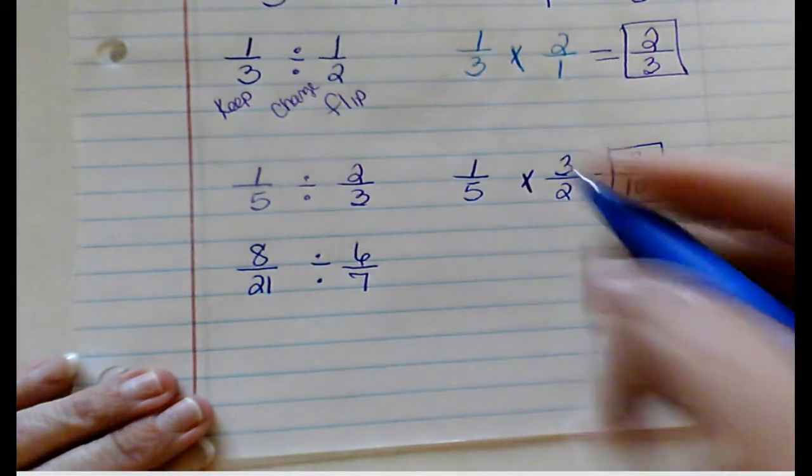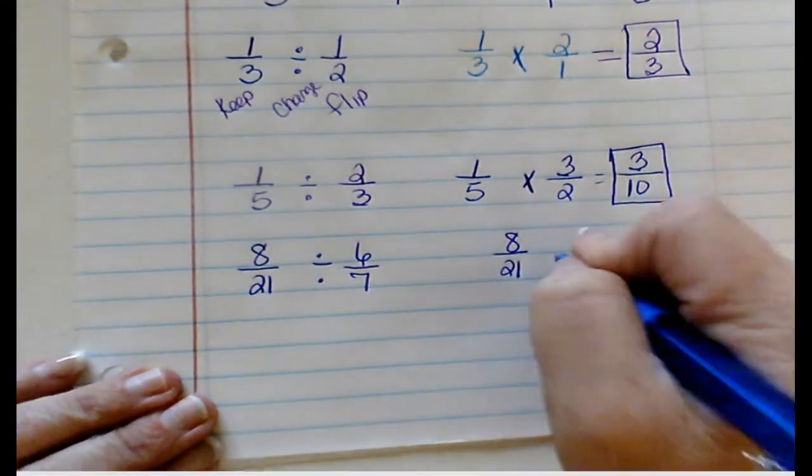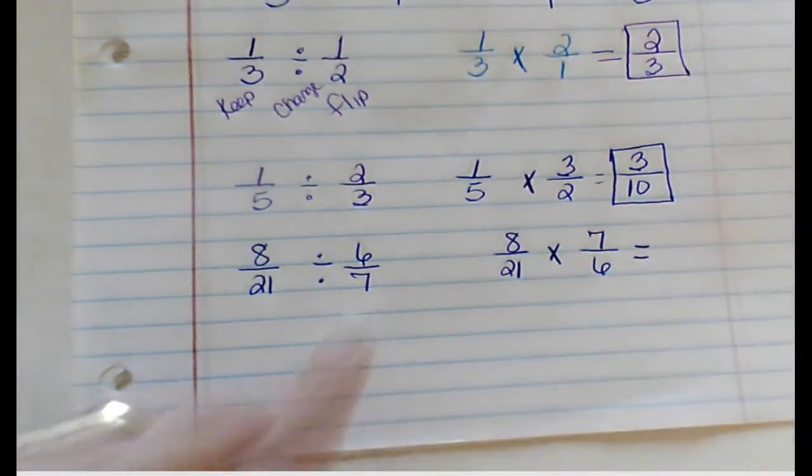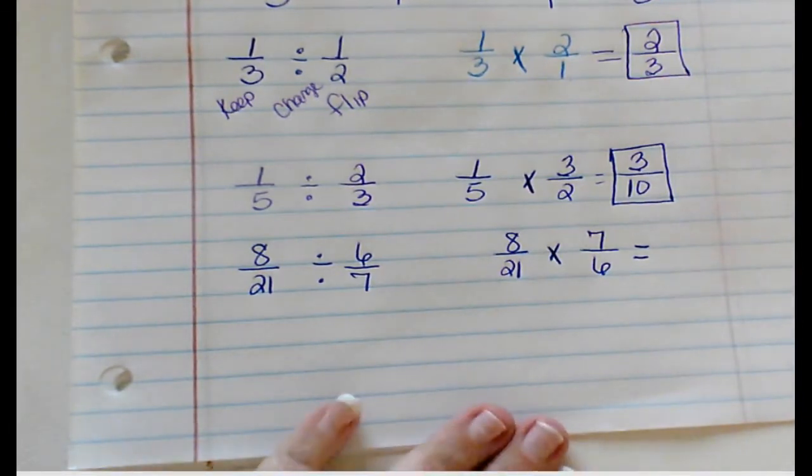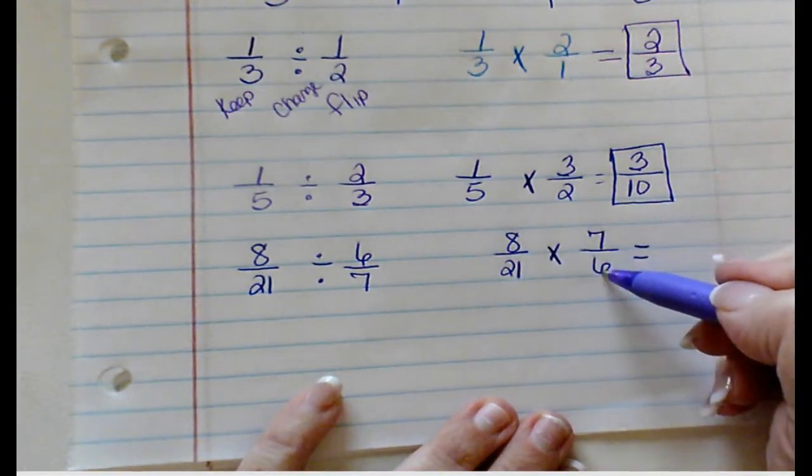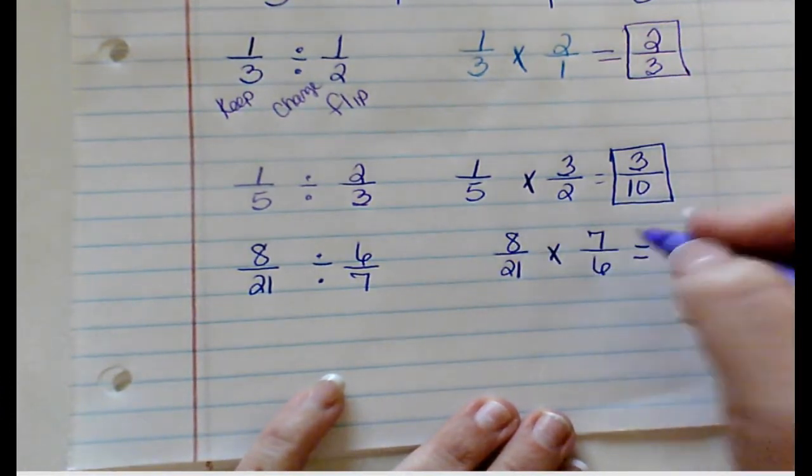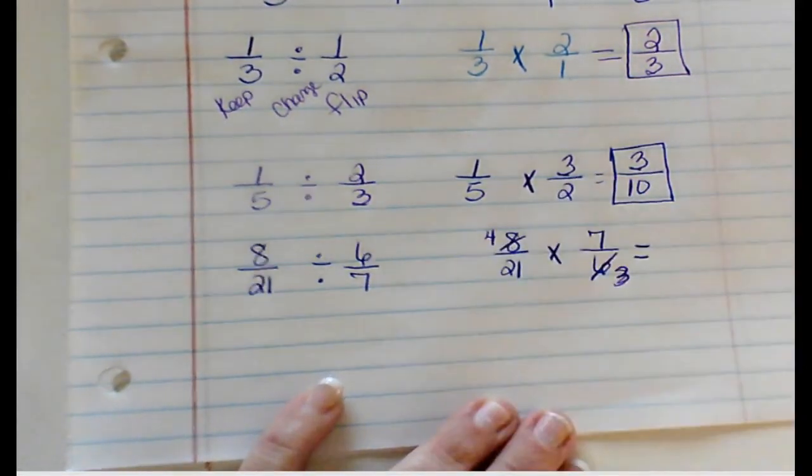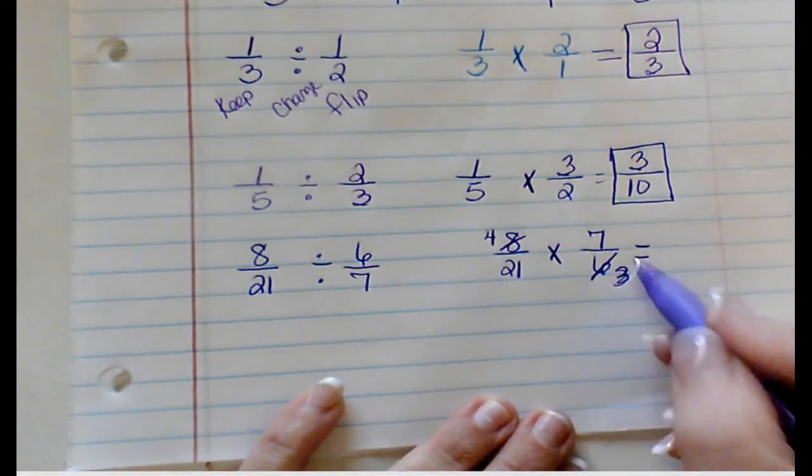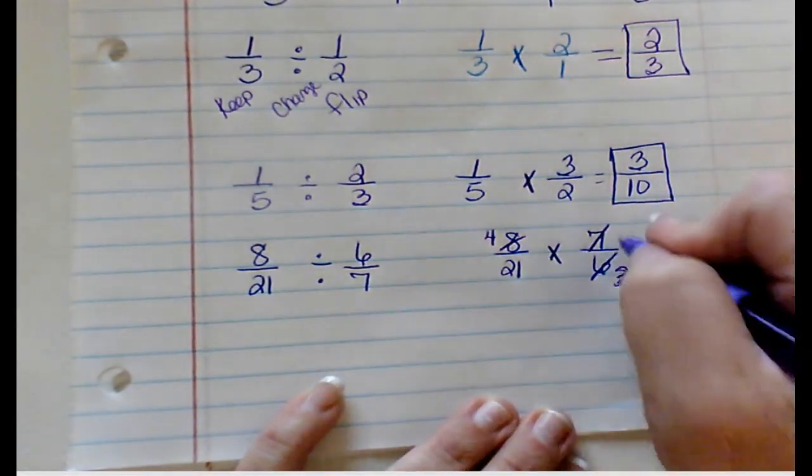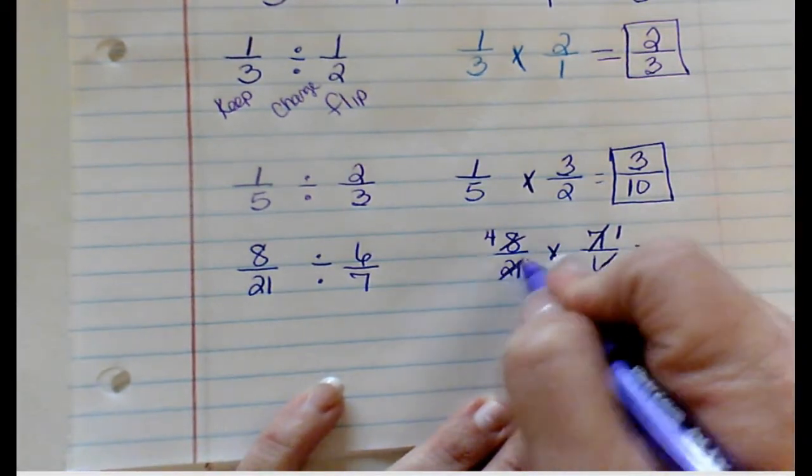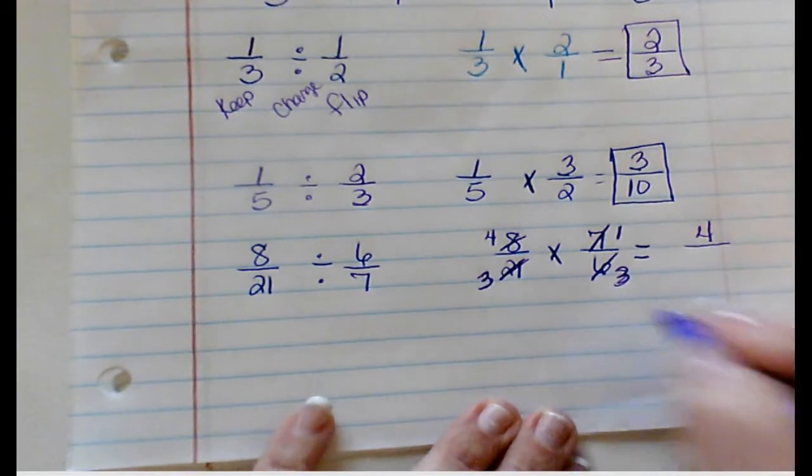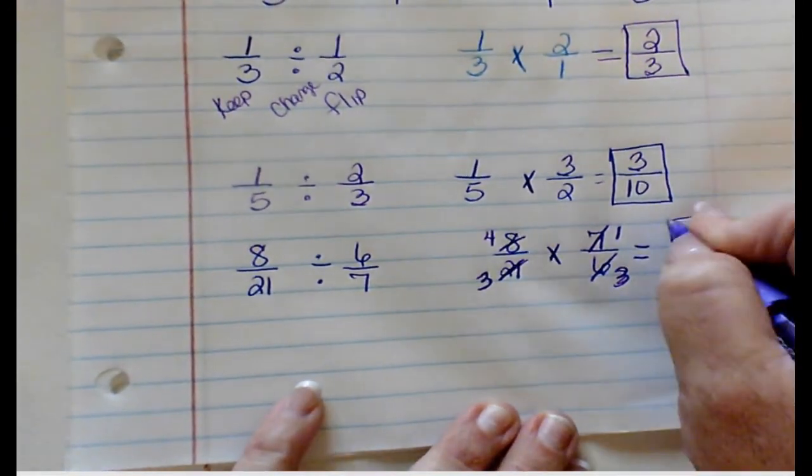8/21 divided by 6/7. I'm going to keep 8 over 21, change it to multiplication, and flip to 7 over 6. Now I have a multiplication. This one I can cross simplify. 8 and 6 I can divide both of those by 2. 6 divided by 2 is 3, 8 divided by 2 is 4. Now I'm going to look at 7 and 21. I can divide both of those by 7. 7 divided by 7 is 1, 21 divided by 7 is 3. 4 times 1 is 4, 3 times 3 is 9. This is my answer.